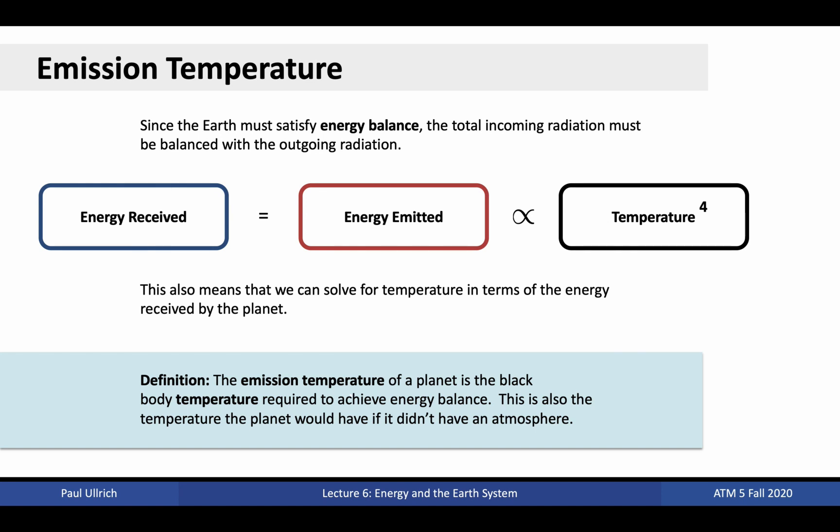We also know, from the Stefan-Boltzmann law, that energy emitted is proportional to temperature to the fourth power. If we invert this equation, then we can actually calculate temperature as a function of energy received. If the Earth had no atmosphere, there would be no other pathways for energy to move in the system. Everything that hit the surface would be absorbed or reflected. All the energy would be used to increase the temperature of the surface, which would in turn drive emission.